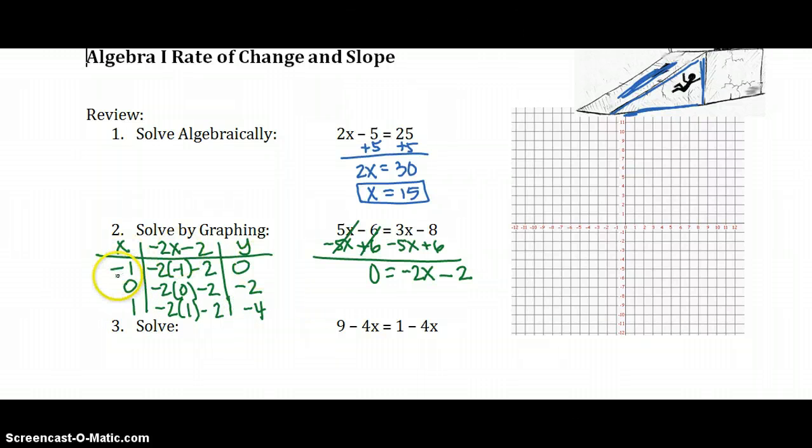So now I'm ready to plot negative 1, 0. Negative 1, 0 is right there. 0, negative 2 would be right here. There's my x-intercept and my y-intercept. And then 1, negative 4. 1, 2, 3, 4. I was just making sure I had not made a mistake previously. And there would be our line.